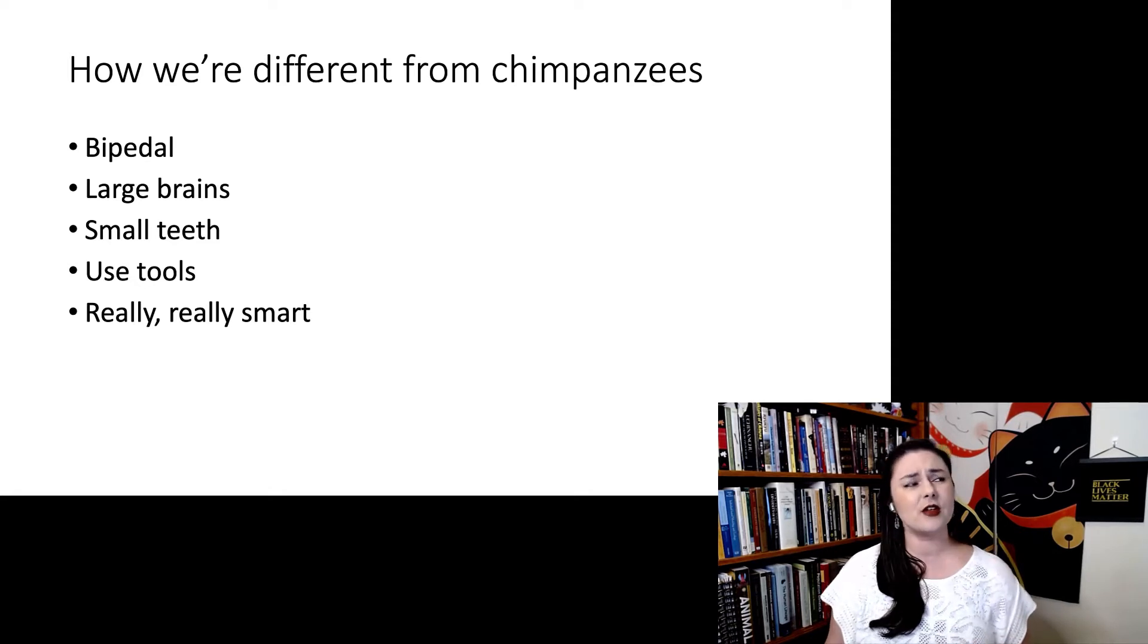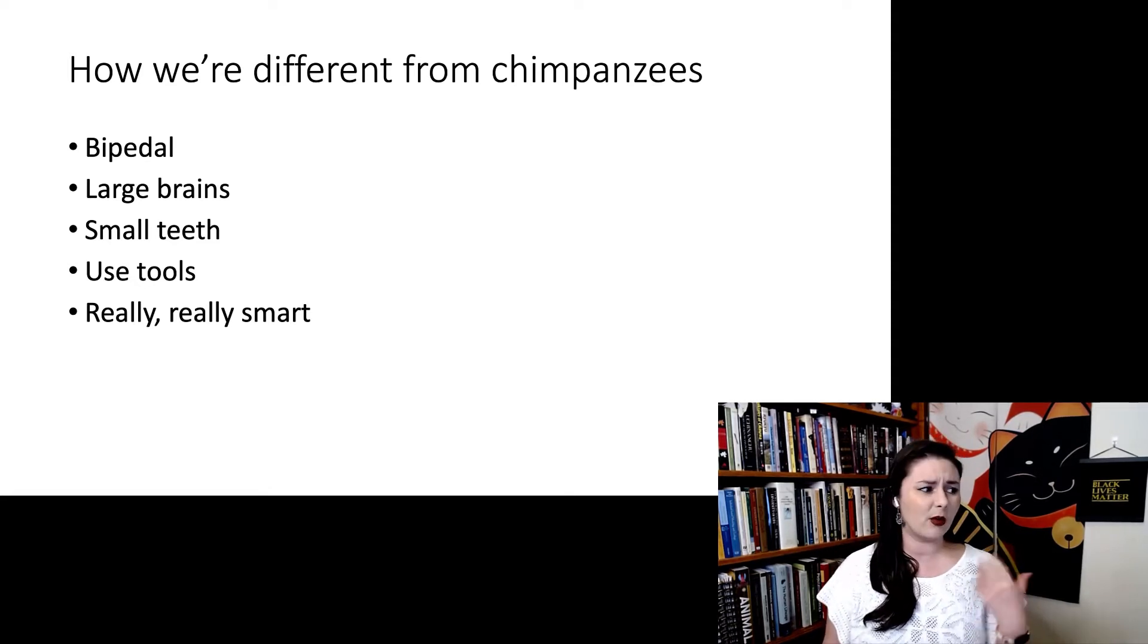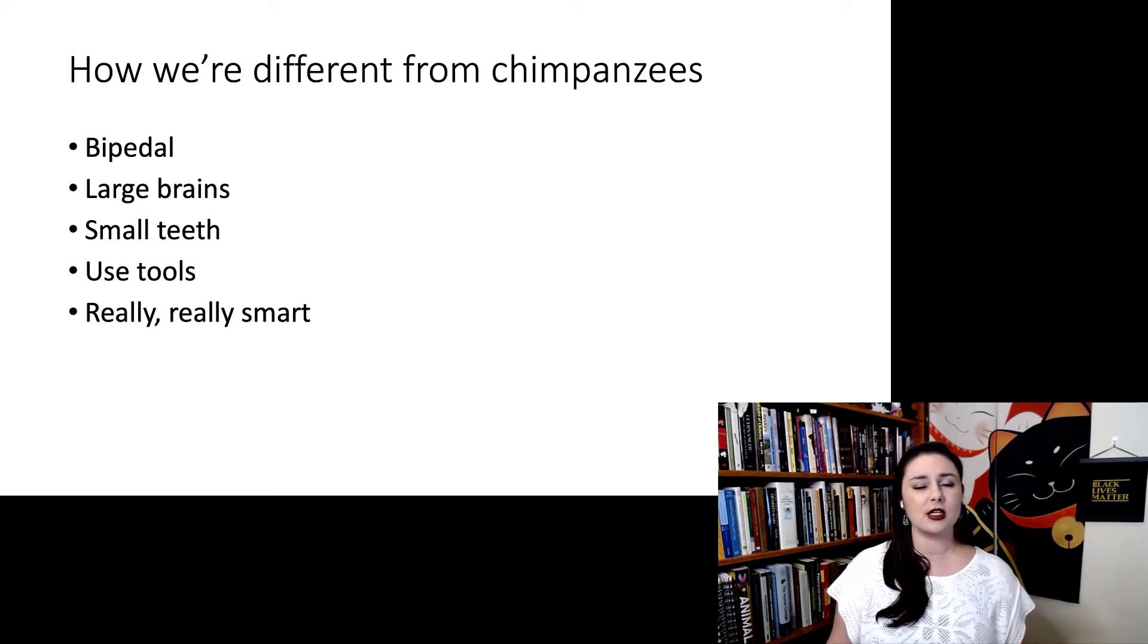And since these are kind of the big features, these are the things that we use to try and imagine what do we think that last common ancestor might have looked like. In a lot of assumptions, people tend to assume that our last common ancestor with chimpanzees was rather chimpanzee-like. But remember, chimpanzees have been evolving just as long as we have. So that last common ancestor may be unlike either us or chimpanzees.